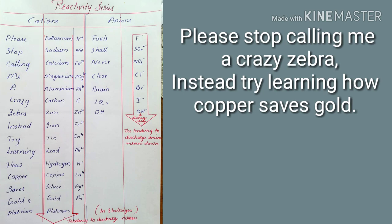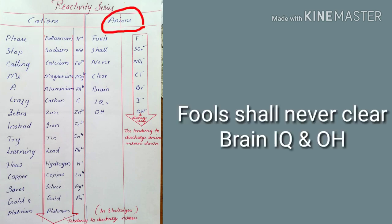Next you have the anions. The shortcut mnemonic is: 'Full shawl never clear brain IQ and OH.' So F for fluorine, S for sulfate ion, N for nitrate ion, C for chlorine ion, B for bromine ion, I for iodide ion, and OH for hydroxide ion.